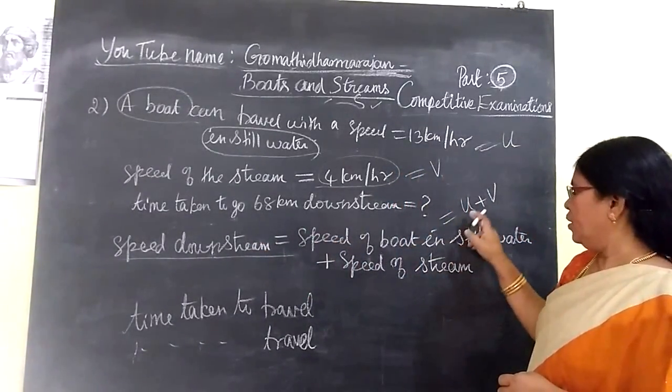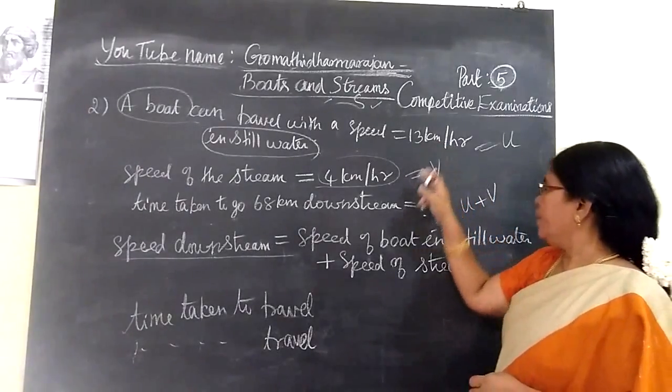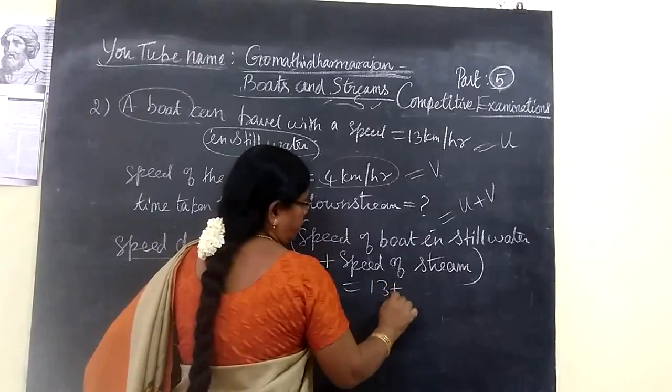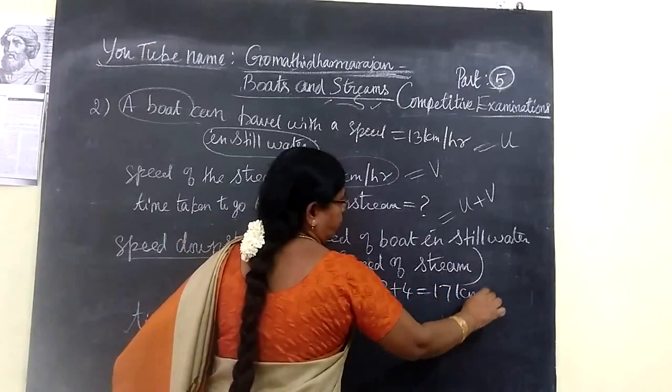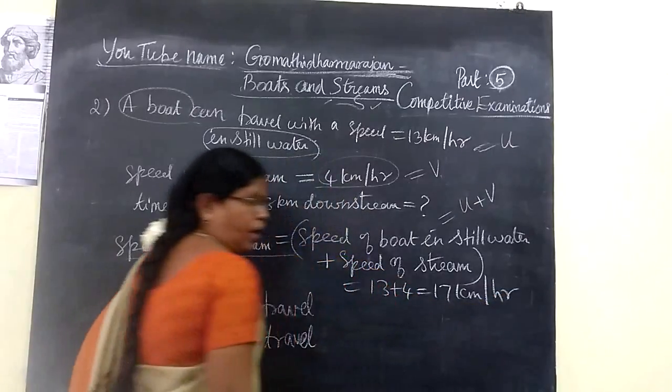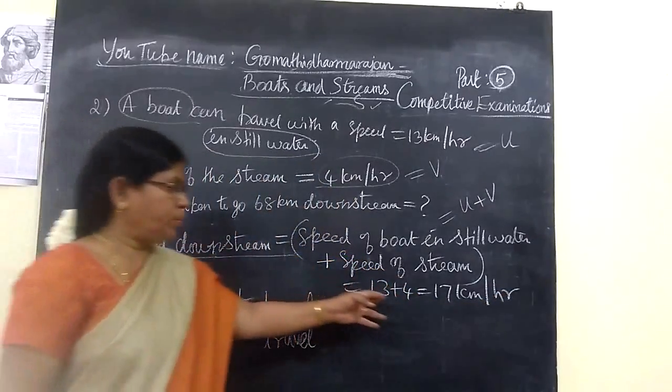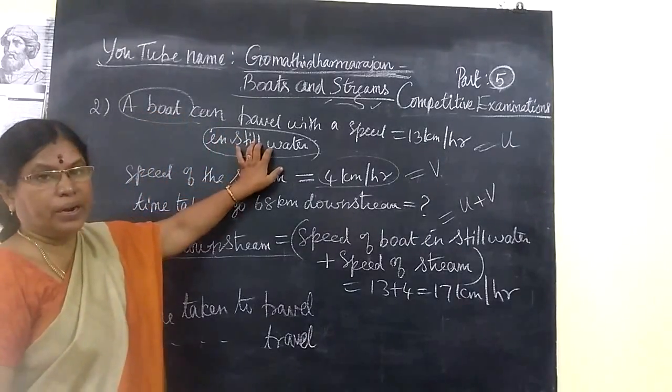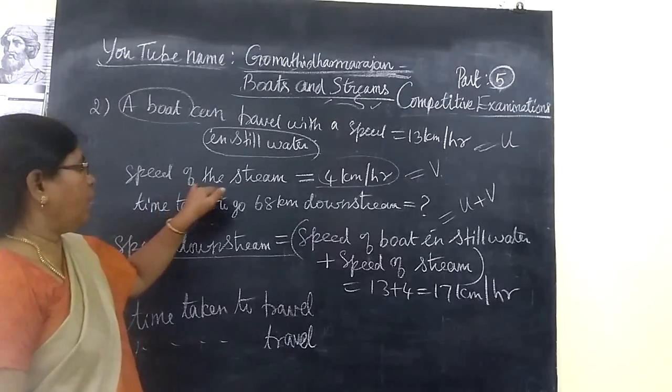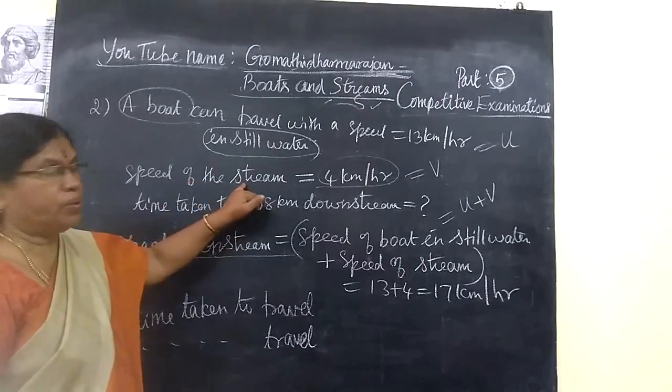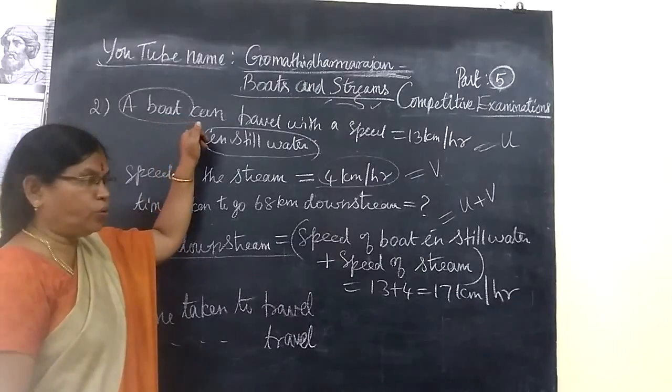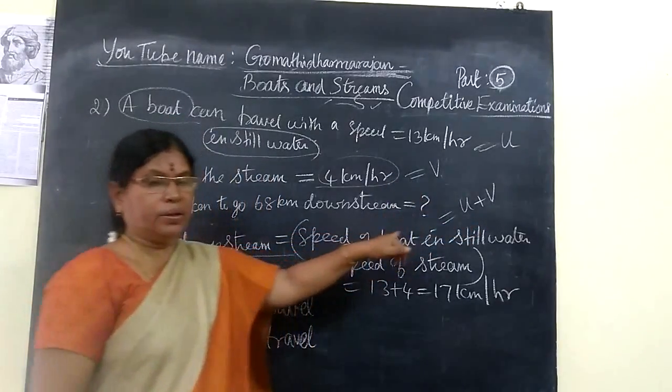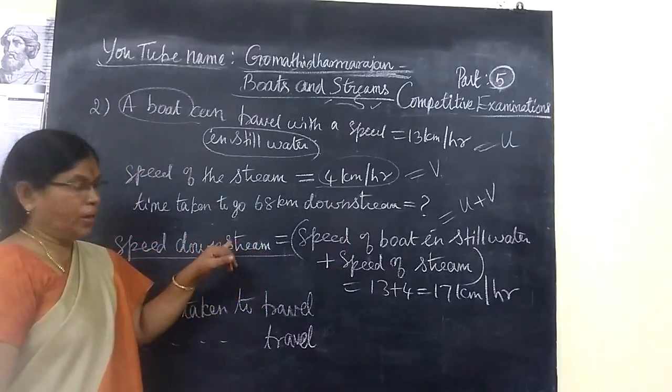We have to add for downstream. So 13 plus 4 equals 17 km per hour. Upstream is minus, downstream is add. We are adding speed of boat in still water and speed of the stream. That is U plus V, which is downstream.